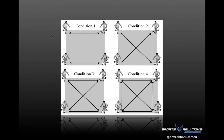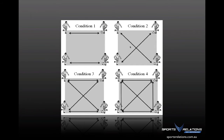They set up four different conditions with senior futsal players. Condition one: back and forward passing over five meters. Condition two: diagonal passing over about seven meters, but predetermined — same as condition one. Condition three introduced the perceptual component, where the player could pass either back and forward or diagonally but had the choice and could pass to a player without the ball. Condition four created an extra option — passing laterally as well as back, forward, and diagonally.